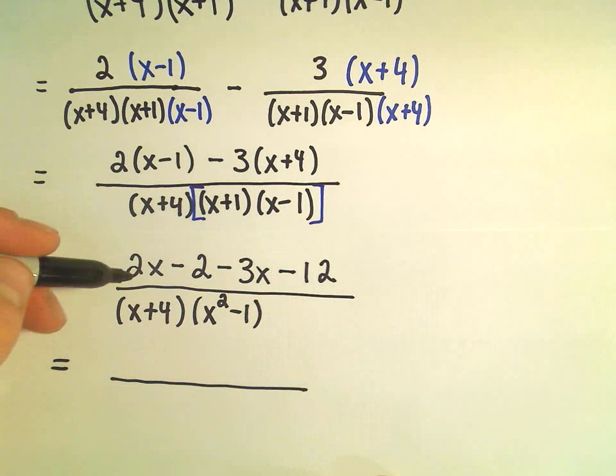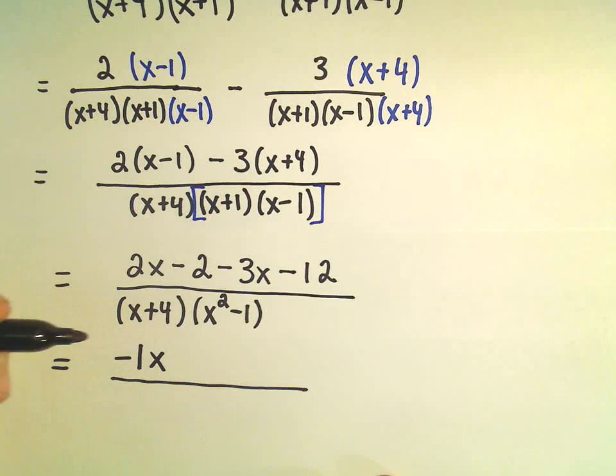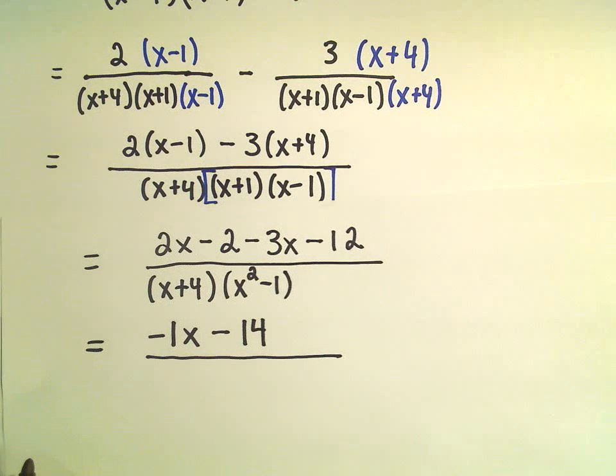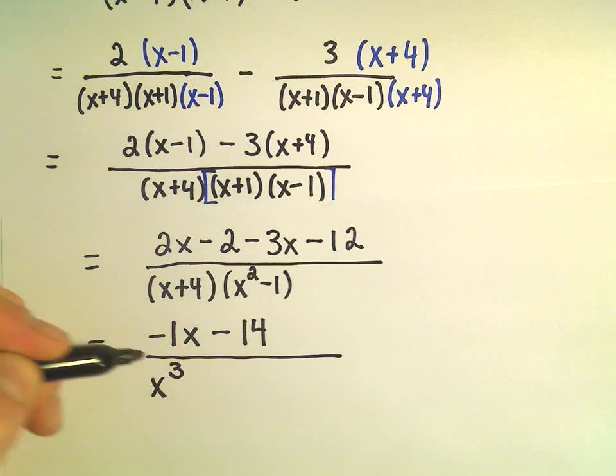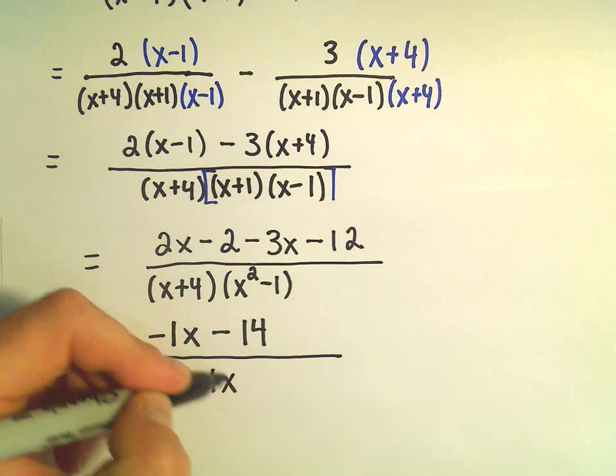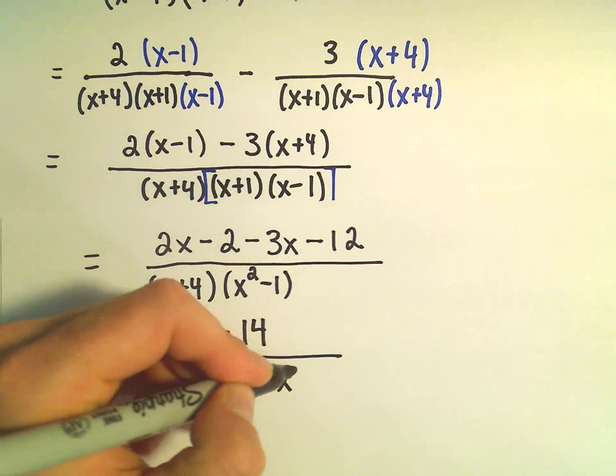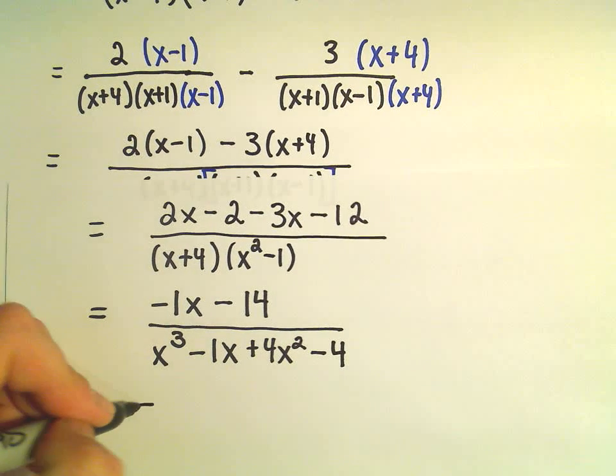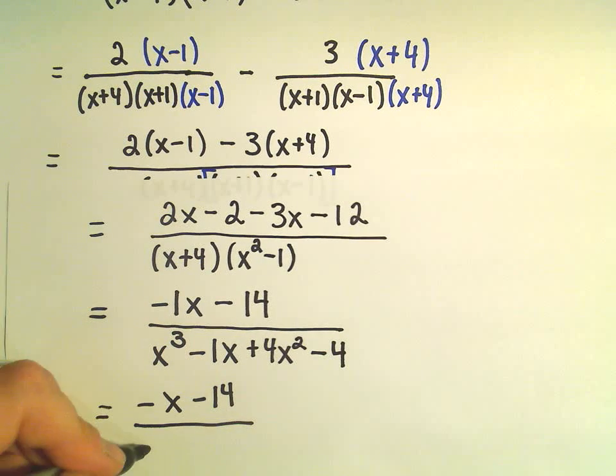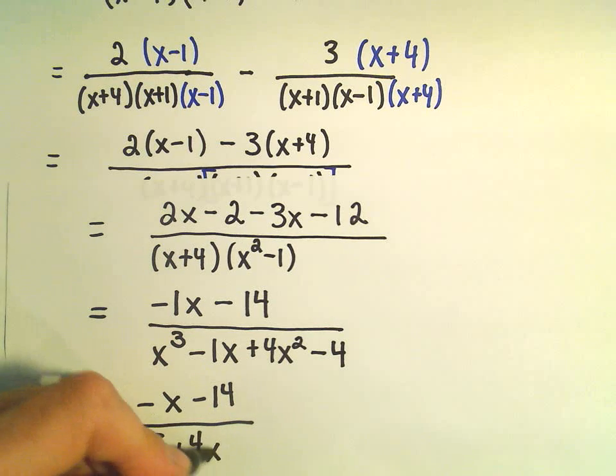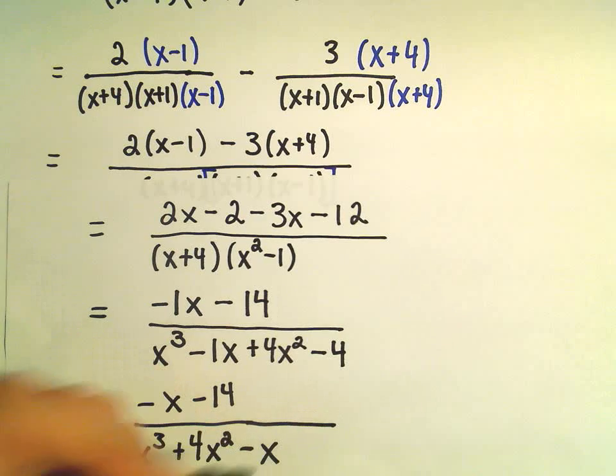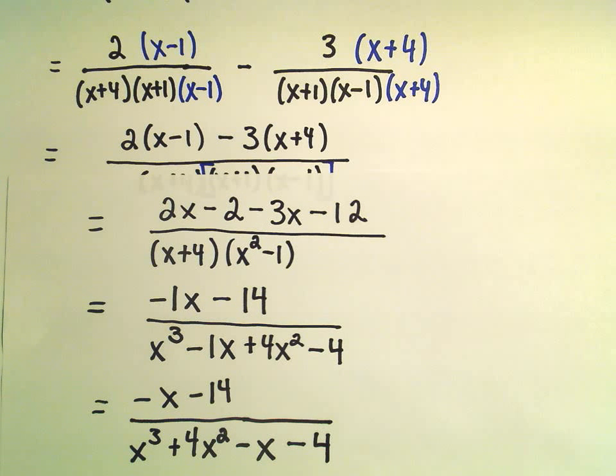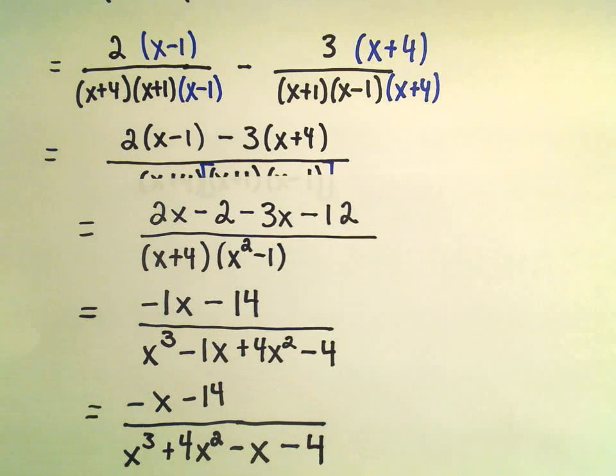So, in the numerator now, we can simplify down. It looks like we have 2x minus 3x. That would give us negative 1x. We have negative 2 minus 12. That'll be negative 14. And now, in the denominator, we would have to distribute things out. x times x squared would give us x cubed. We would have x times negative 1, which is negative 1x. Positive 4 and x squared is positive 4x squared. And then positive 4 times negative 1 is negative 4. I'm going to do one last thing, which is simply to rewrite the denominator in descending order. So, x cubed, I'm going to write my positive 4x squared next. We've got negative 1x. And then we have minus 4 left over. And we would now consider that simplified. We took our 2 separate fractions, and we've been able to combine them as a single fraction.